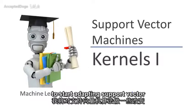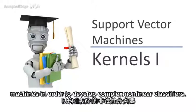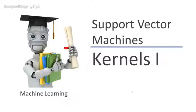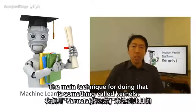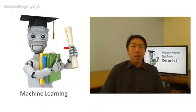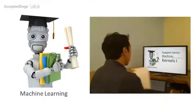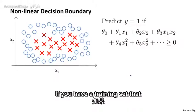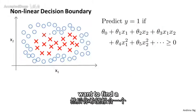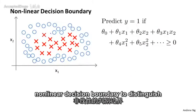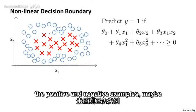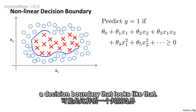In this video, I'd like to start adapting support vector machines in order to develop complex nonlinear classifiers. The main technique for doing that is something called kernels. Let's see what these kernels are and how to use them. If you have a training set that looks like this, and you want to find a nonlinear decision boundary to distinguish the positive and negative examples, maybe a decision boundary that looks like that.